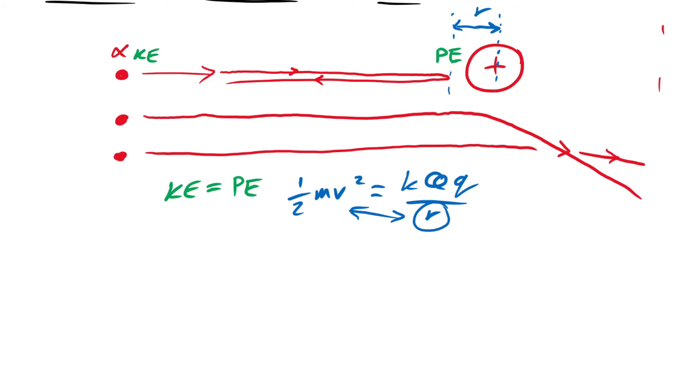So if we swap r with half mv squared we end up with r equals 2kQq over mv squared, where r is the distance between, as per usual, the centers of the charges that we're looking at. So there we go, that's escape velocity and distance of closest approach. If you have any questions then put them in the comments down below and I'll see you next time.